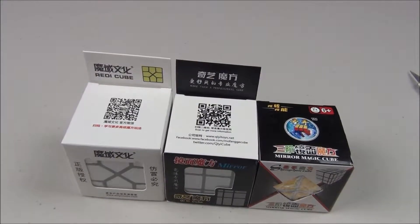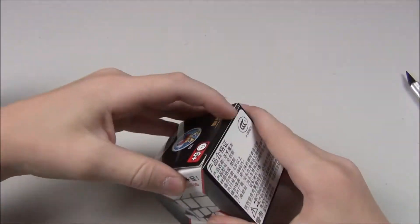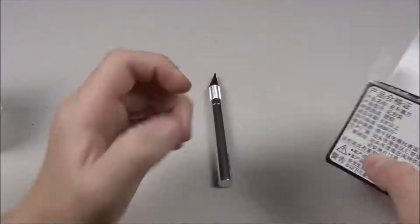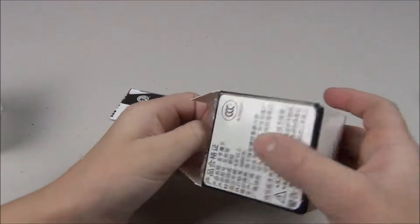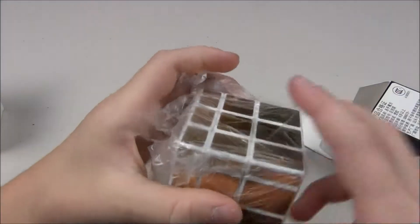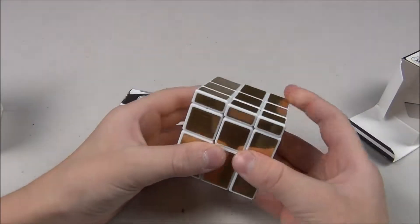So first, let's start out with the Shang Shao mirror blocks. I have it with white plastic and gold stickers. And this comes with the pamphlet. And here is the actual puzzle. I think, oh wow, I think that looks really cool.